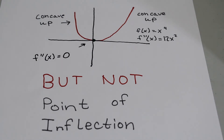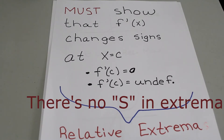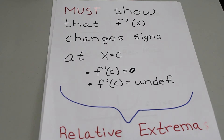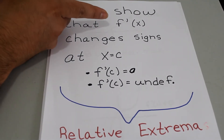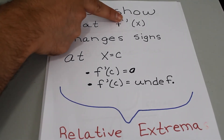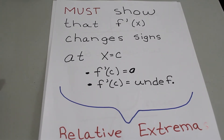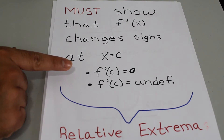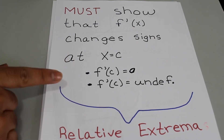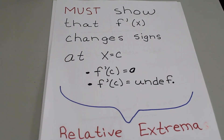You can use a sign chart to check that. The same logic applies when looking for relative extrema — the only difference is that we look at the first derivative, not the second. There can be a relative extrema when the first derivative equals 0 or is undefined, but in both cases you must show that the sign changes.